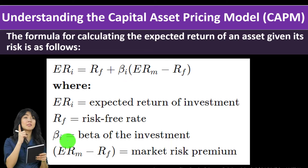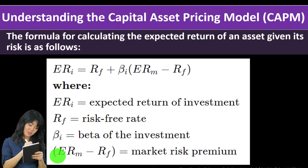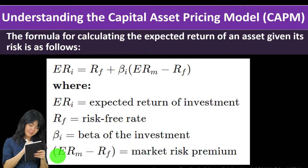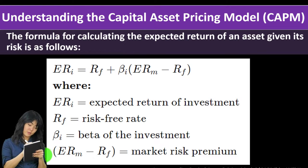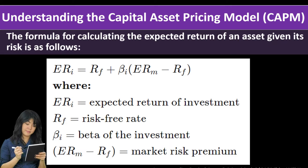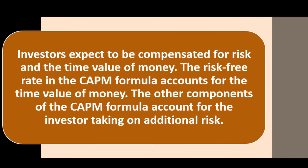...added to the beta of the investment multiplied by (ER minus RF), which is the market risk premium. We'll do some examples on this in our practice problems, but conceptually: investors expect to be compensated for risk and the time value of money. When investing, money today is worth more than money tomorrow, so we factor in time value of money.